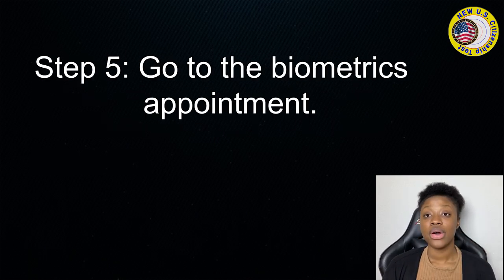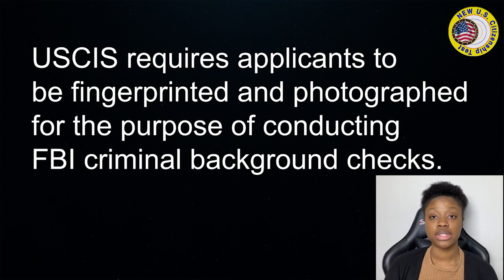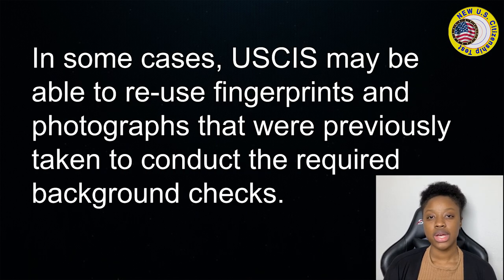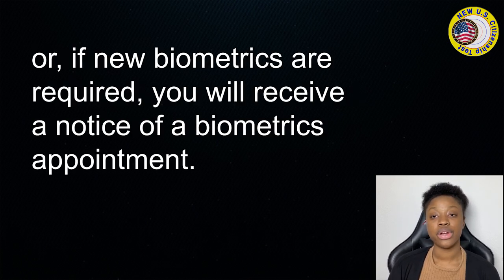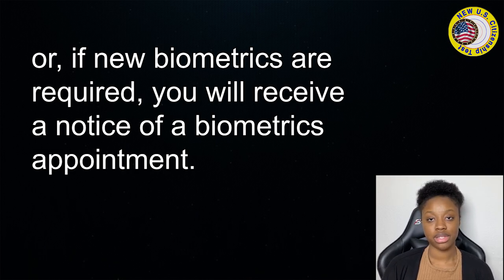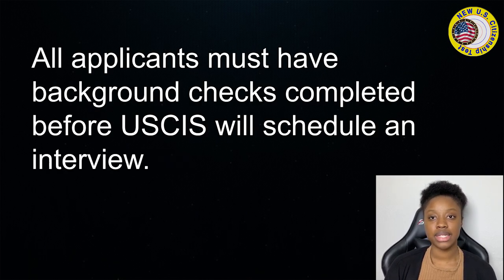Step 5: Go to the biometrics appointment. USCIS requires applicants to be fingerprinted and photographed for the purpose of conducting FBI criminal background checks. In some cases, USCIS may be able to reuse fingerprints and photographs previously taken. You will either receive a notice that your biometrics have been reused, or if new biometrics are required, you will receive a notice of a biometrics appointment. All applicants must have background checks completed before USCIS will schedule an interview.